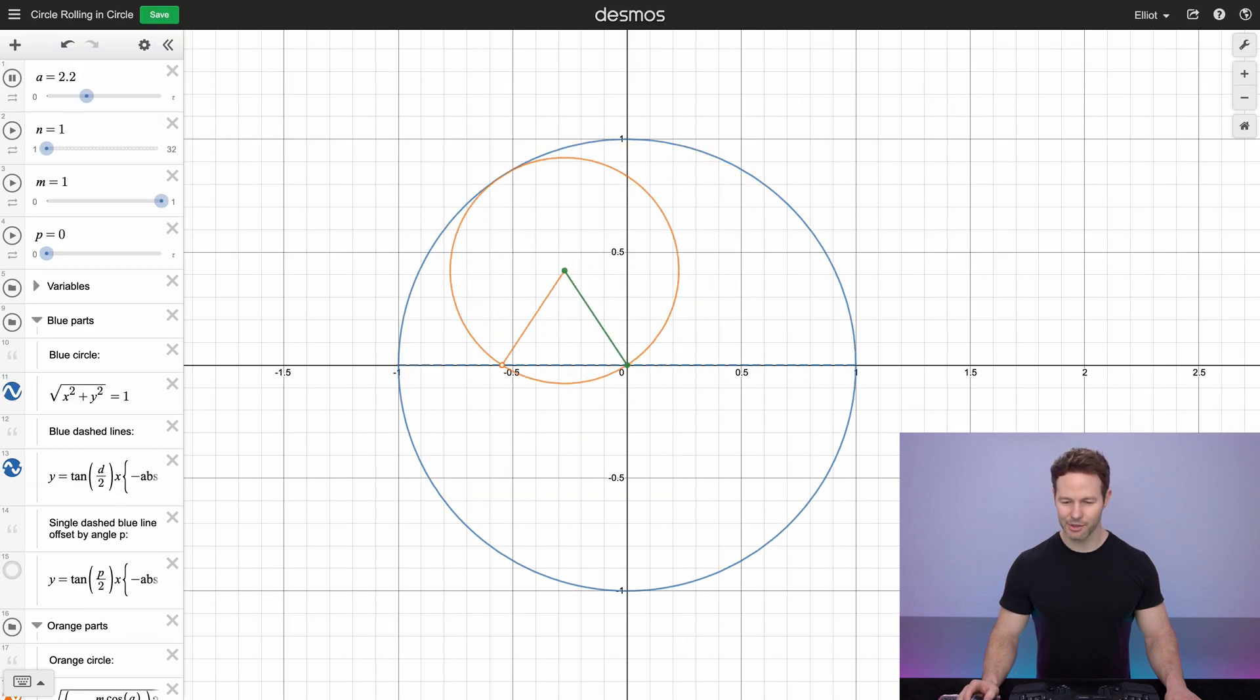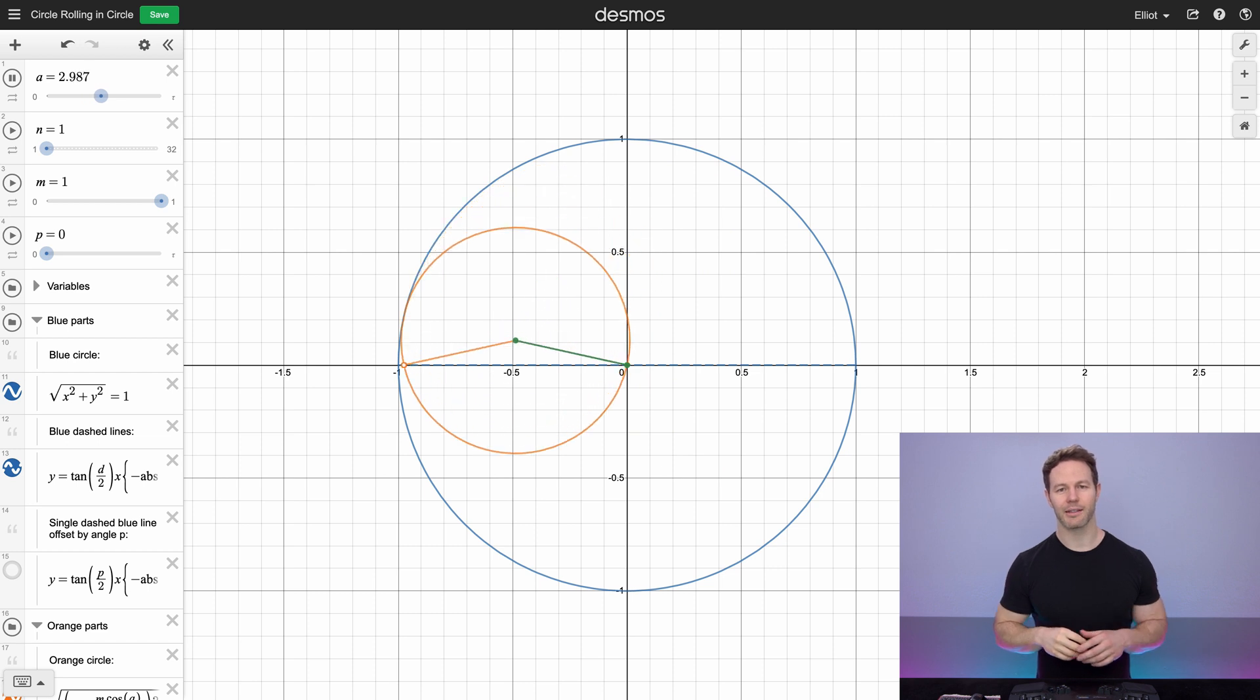If we turn on this green line, which connects the center of the orange circle to the center of the blue circle, we can really start to see why that effect is occurring. It's really the fact that the orange circle is rotating in one direction but its position is rotating in the other direction, and because they're at the same rate, they'll cancel out along one dimension but add together along another dimension.